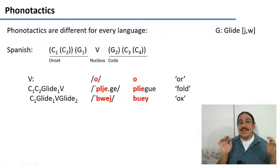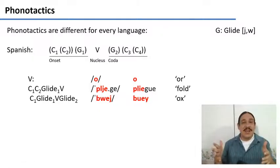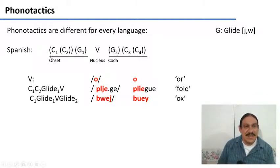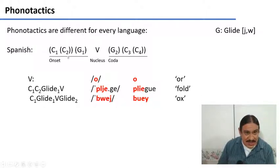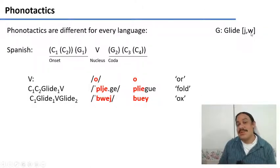The phonotactics of every language is different. For example, Spanish has a different set of syllables that it permits. In Spanish you can have optional onset consonants, an optional glide — which can be the y in 'yes' or the w in 'wow,' for example.